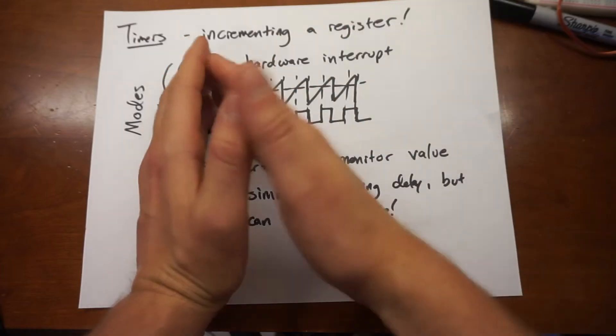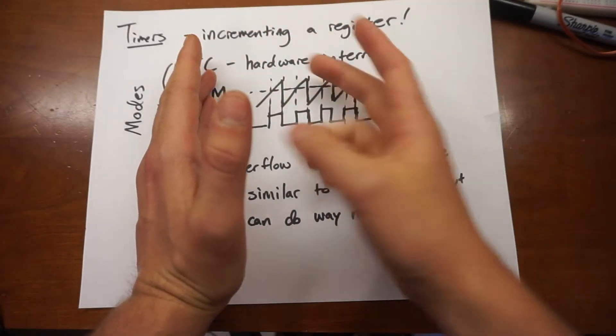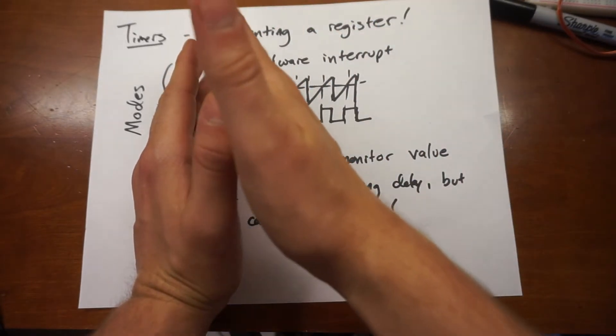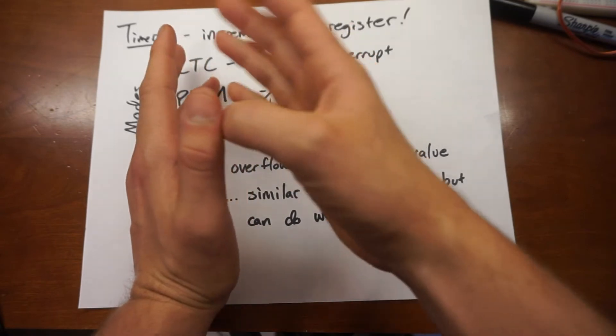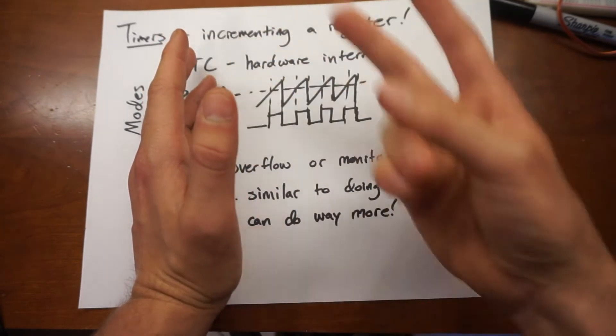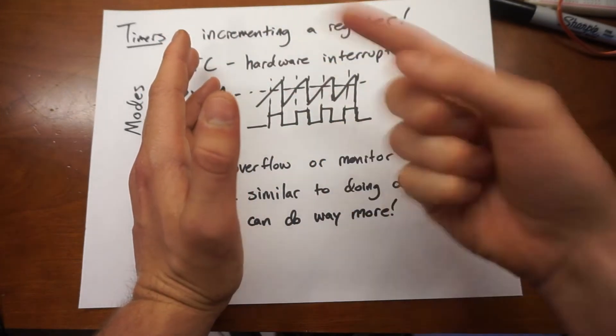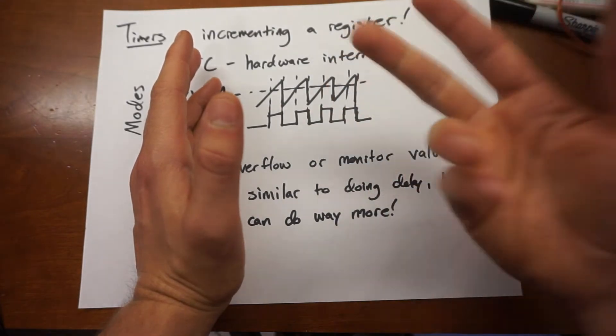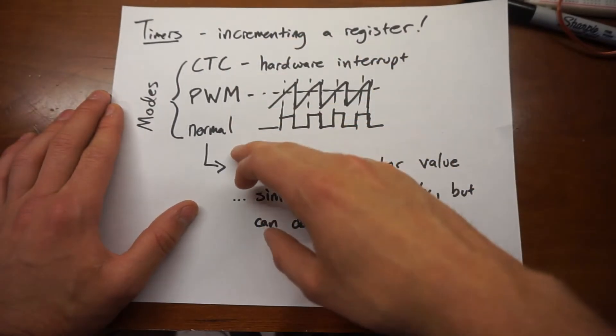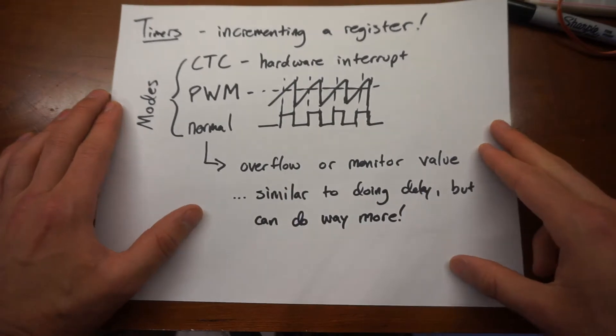For example, if I have a pre-scale factor of 2, then it is incremented once every 2 clock cycles. So if I have an 8 megahertz clock and I have a pre-scale factor of 2, that means my timer is incremented at 4 megahertz.